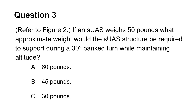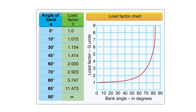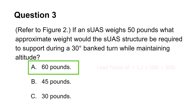You do not even need to look at the chart to answer this question based on the choices presented. Turns will generate a load factor above 1G. This means that the weight at turns will be above 50 pounds, making choice A the answer. But to answer this question with a chart, locate 30 degrees on the horizontal line. Then, go to the intersection with the reference line and locate the load factor. In our case, it will be about 1.2. Multiplying the load factor of 1.2 by the weight of 50 pounds produces the result of 60 pounds.